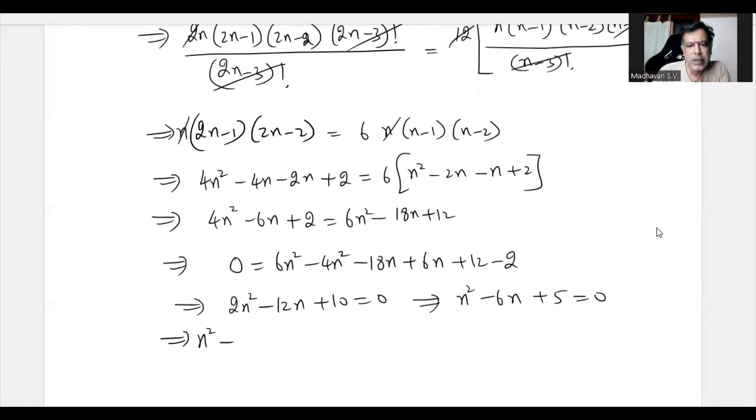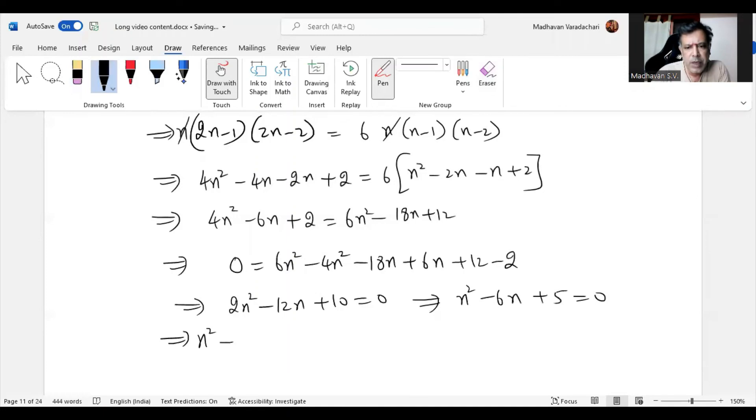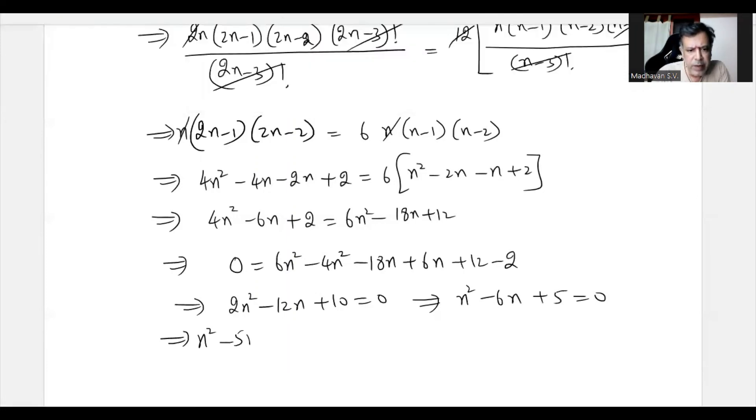The middle term can be split as -5N - N plus 5 equal to 0. So now in the first two terms, common is N, so N times (N-5) minus (N-5) equal to 0, which means (N-5) times (N-1) equal to 0.